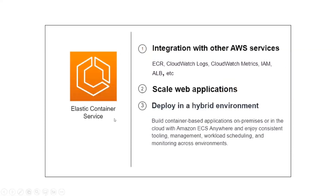Elastic Container Service is in tight integration with other AWS services. ECR is used for storing images, and these images can be pulled and run using the container service. Container logs can be pushed to CloudWatch Logs for reference. ECS can also be integrated with CloudWatch Metrics, and we can apply different IAM policies to the container service.